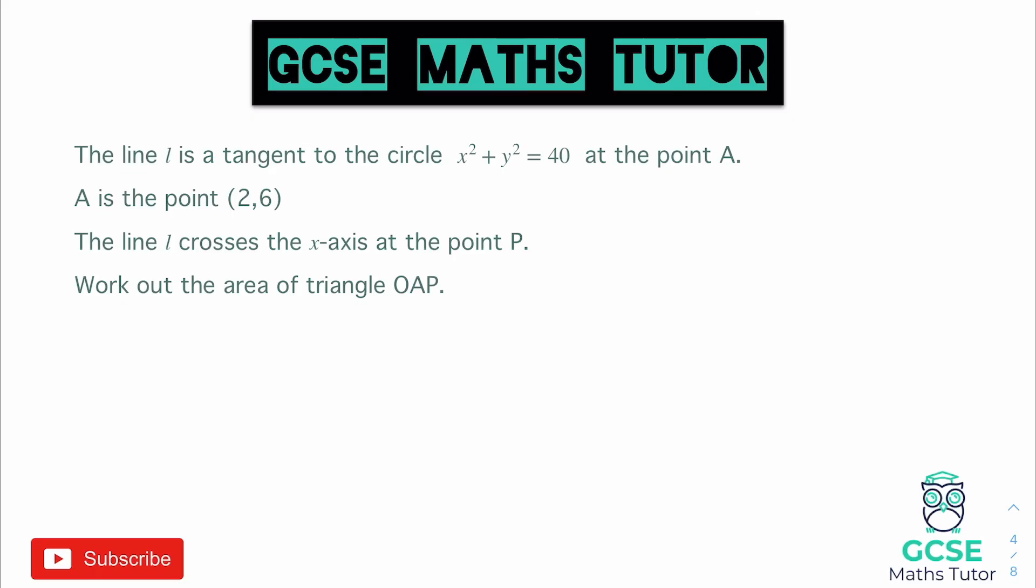Okay, so all the topic videos that you're going to need for this particular question are going to be linked in the description, so make sure you check out those for any of these types of videos. Now this question here says the line L is a tangent to the circle x squared plus y squared equals 40 at the point A, and then it says A is the point (2,6). That's important for us to be able to visualise it, and it also tells us that coordinate where our tangent is meeting the circle. So we'll go about drawing that in just a minute. It says the line L crosses the x-axis at the point P, work out the area of triangle OAP. So let's actually visualise this and see what we're working with.